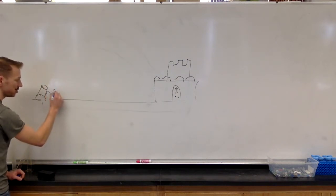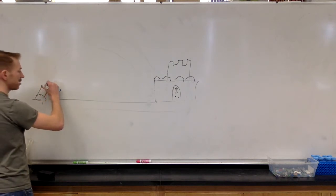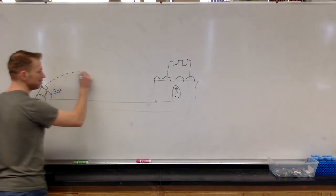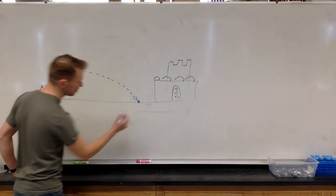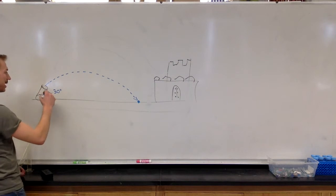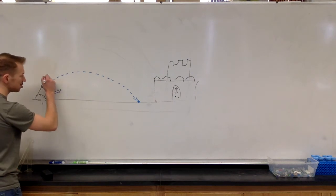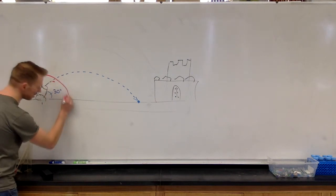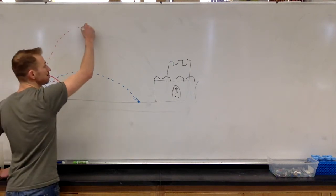Let's say that this is a 30 degree angle. If we launch this at a 30 degree angle, it will mostly be horizontal. And it would give us a range of something like this. If we changed it to a 60 degree angle, it would look something like this. And it would go much, much, much higher.